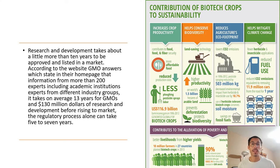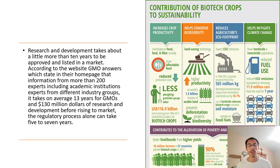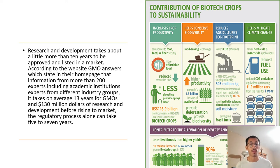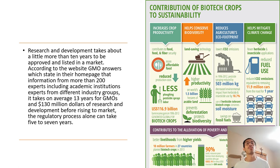American authors have estimated that in the period of 1996 to 2011, the adoption of genetically engineered herbicide-tolerant and insect-resistant corn caused a reduction in the volume of active ingredients of herbicides and insecticides of 10.1% and 45.2% respectively.